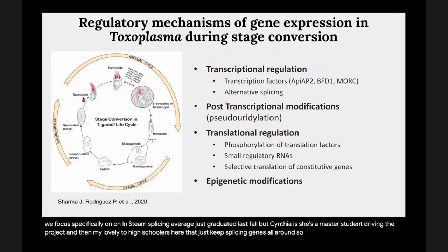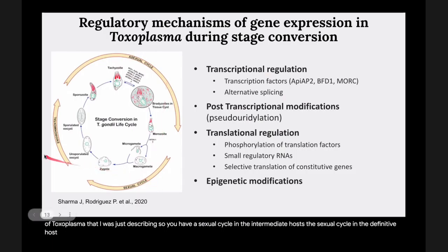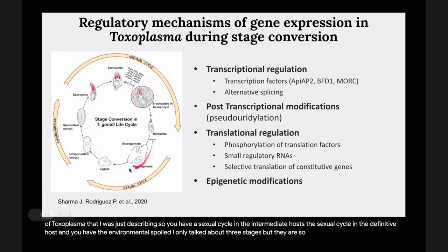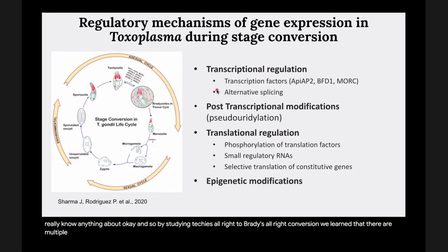Looking at the life cycle of Toxoplasma: there's a sexual cycle in the intermediate host, a sexual cycle in the definitive host, and environmental sporogony. There are so many more stages we don't really know anything about. By studying tachyzoite to bradyzoite conversion, we've learned that there are multiple regulatory mechanisms the parasite uses to ensure this transition happens correctly.